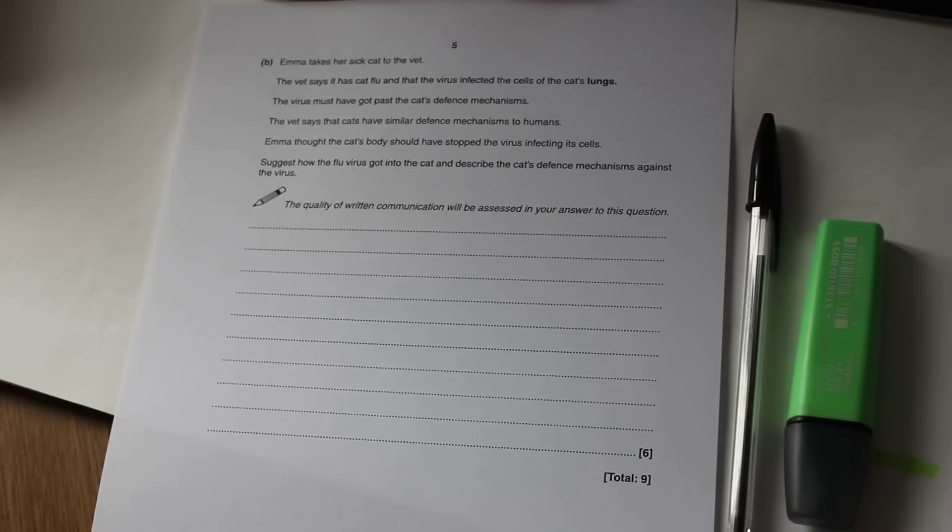So the question we've got is Emma takes her sick cat to the vet. The vet says it has cat flu and that the virus infected the cells of the cat's lungs. The virus must have got past the cat's defense mechanisms. The vet says that cats have similar defense mechanisms to humans. Emma thought the cat's body should have stopped the virus infecting its cells. Suggest how the flu virus got into the cat and describe the cat's defense mechanisms against the virus.